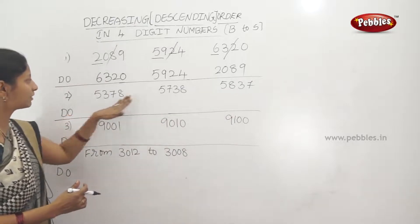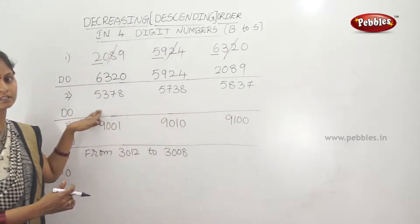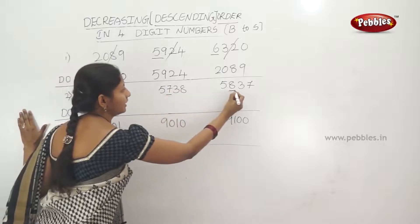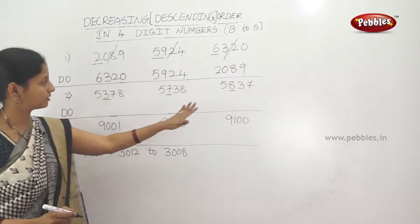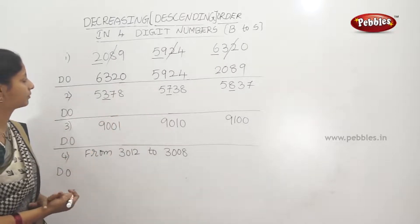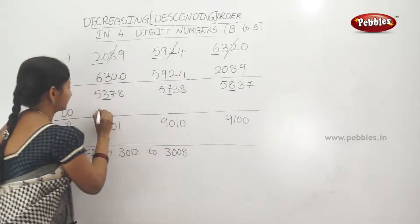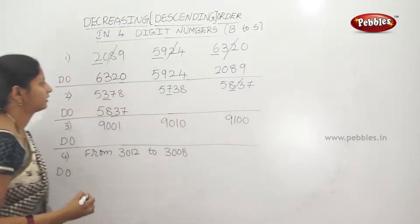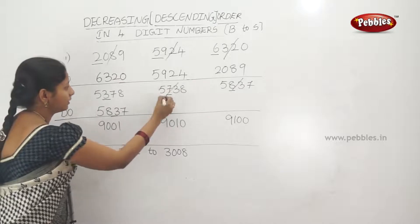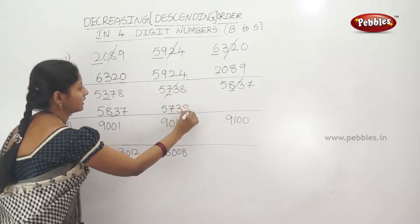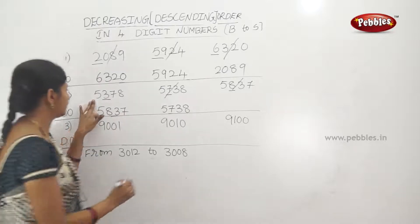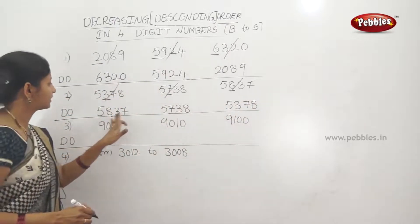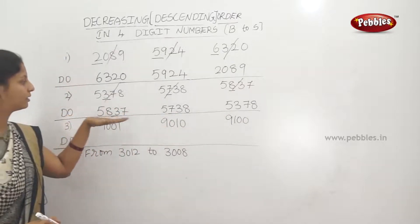Next descending example: 5,378; 5,738; 5,837. First digits are all 5 — same. Second digits are 3, 7, 8 — different. Biggest second digit is 8, so 5,837 is the biggest number. Next is 5,738. The smallest is 5,378. Descending order: 5,837; 5,738; 5,378.